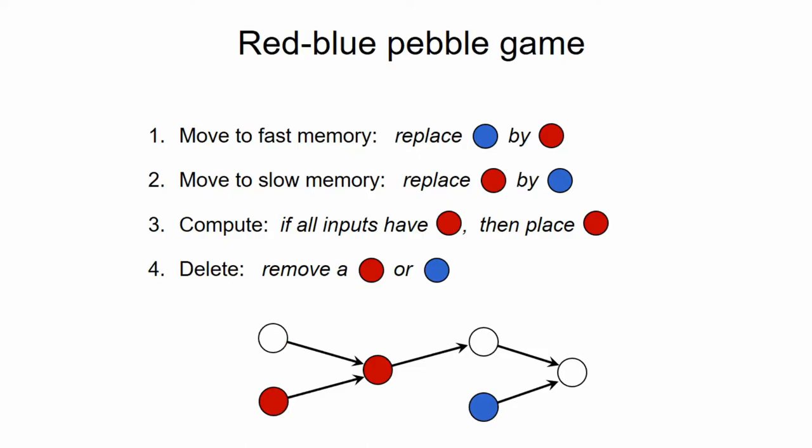And in Red Blue Pebble Games, we assume that the first two operations, the so-called transfer operations, have a cost of one, while the last two operations are essentially free. This is maybe surprising, but not that unrealistic, because in practice, computing a new value from values in cache usually takes a much smaller magnitude of time than moving a value between cache and RAM, for example.